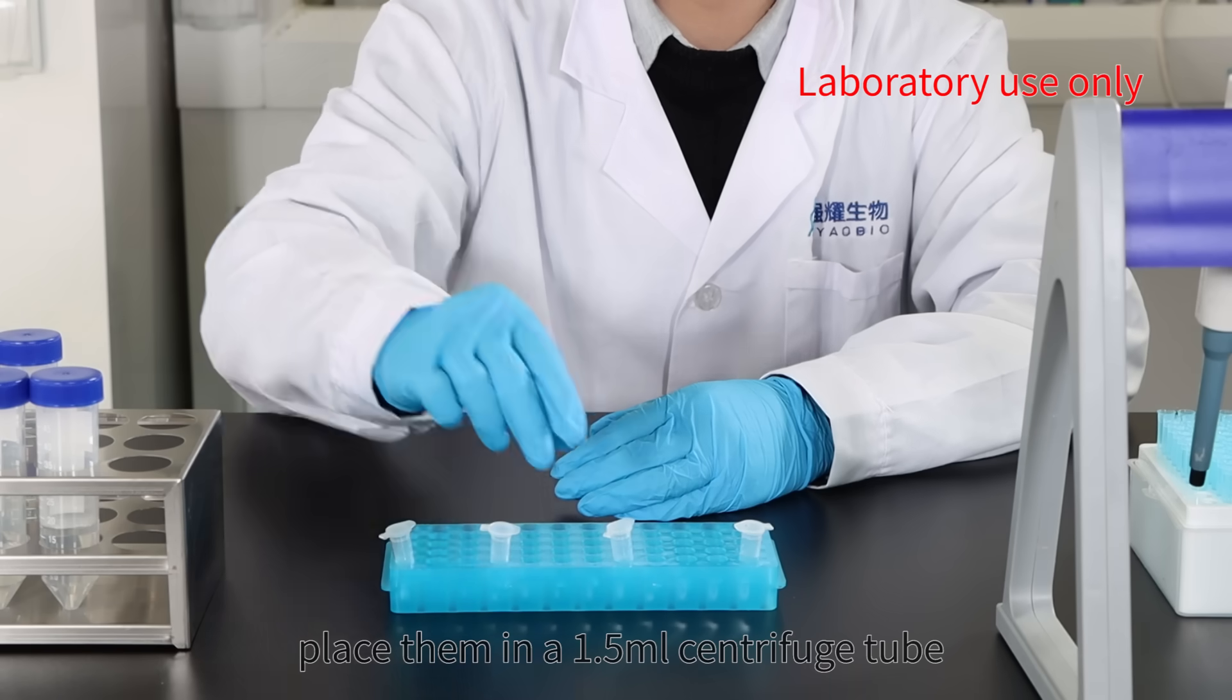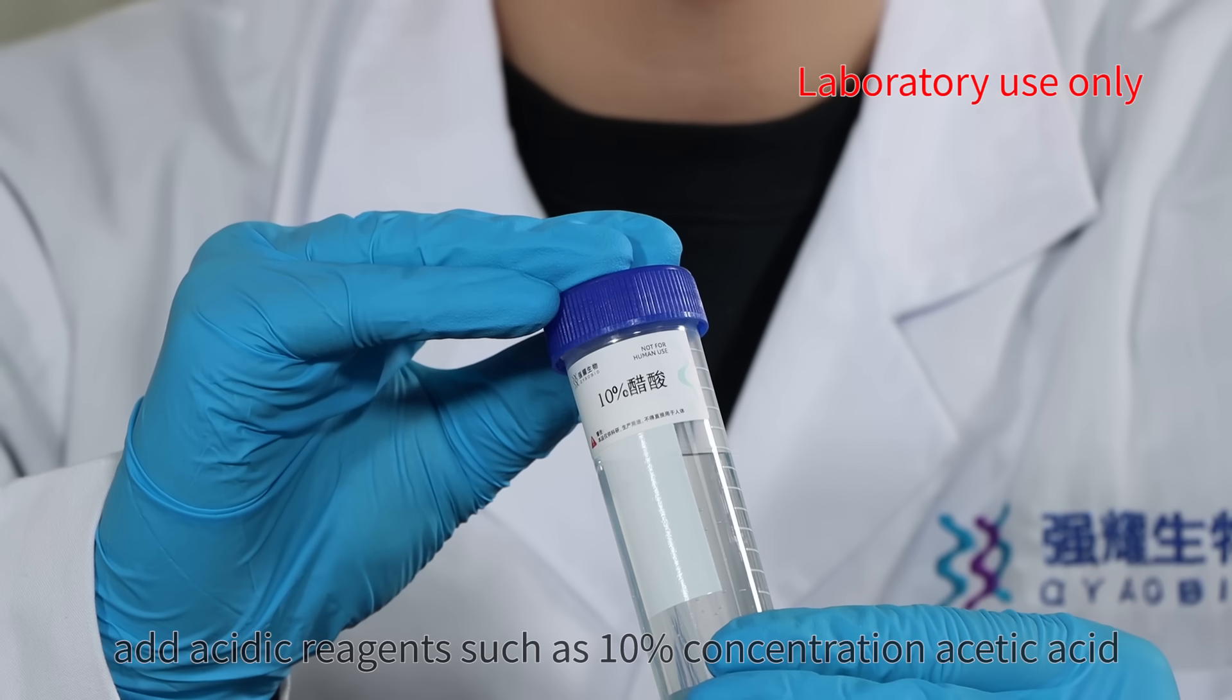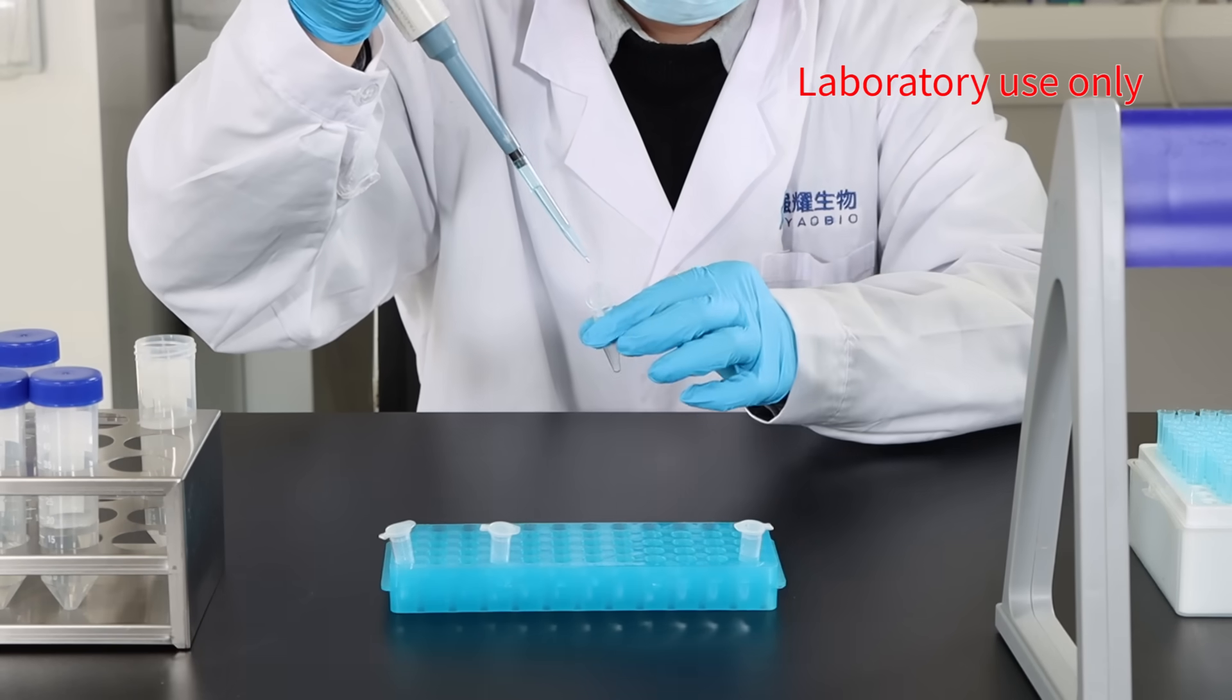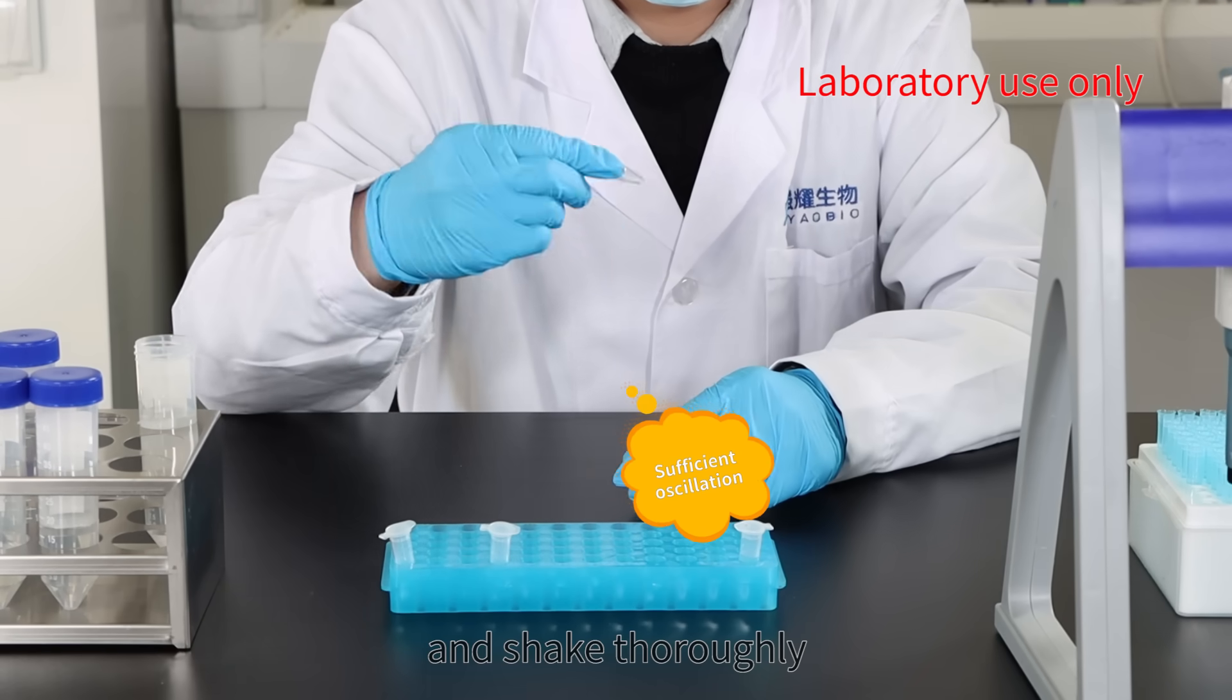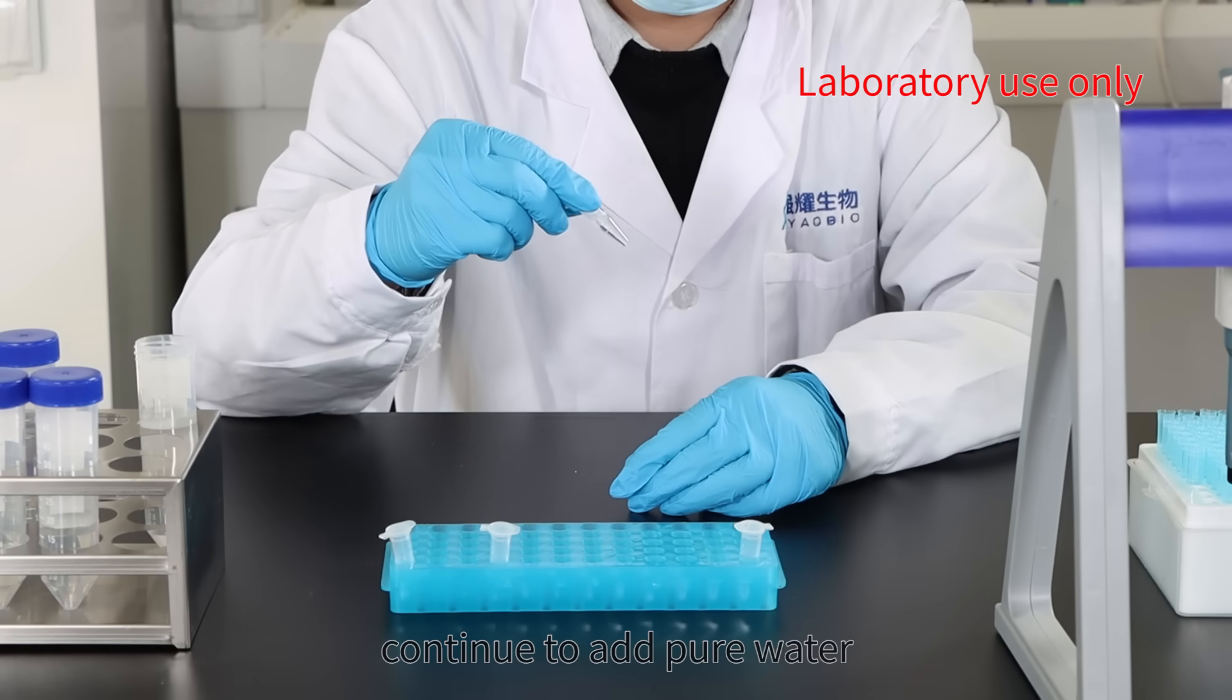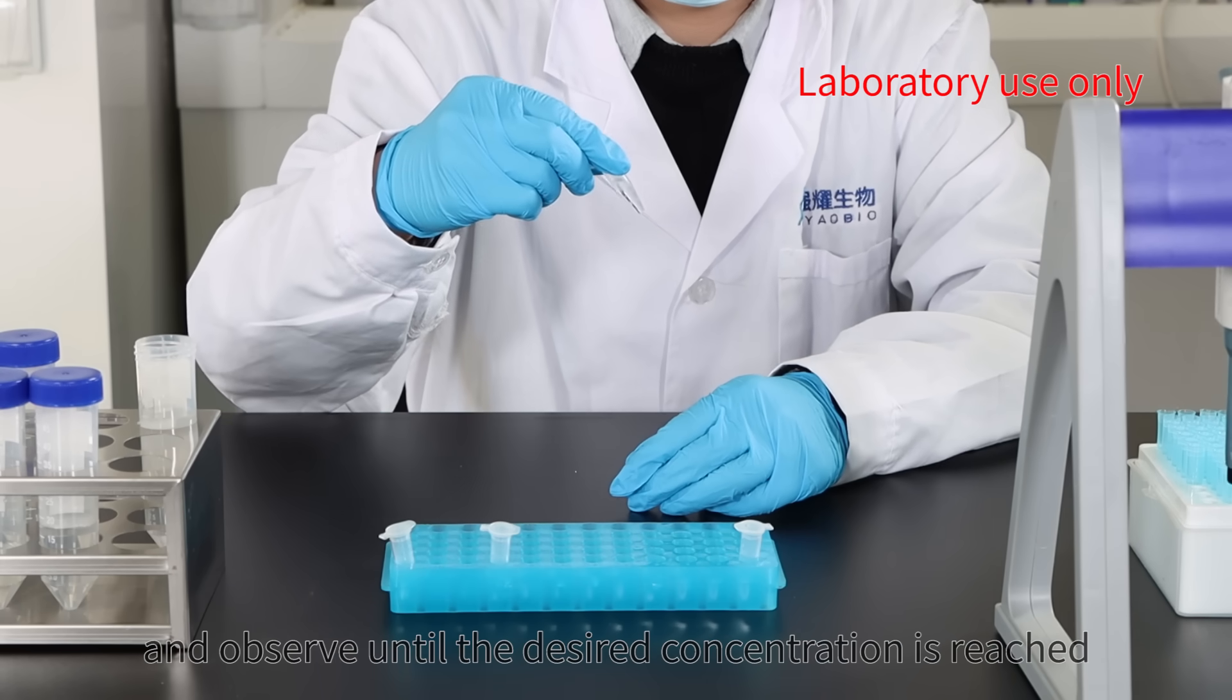Two, regarding alkaline peptides: select a standard amount of peptides, place them in a 1.5 milliliter centrifuge tube, and add acidic reagents such as 10% concentration acetic acid. Shake thoroughly. After dissolution, continue to add pure water to continuously dilute and observe until the desired concentration is reached.